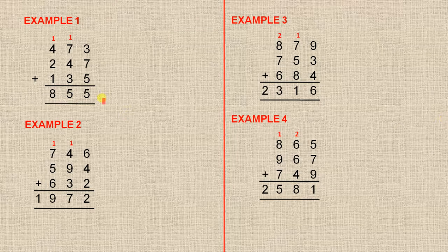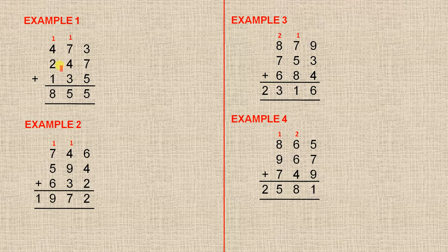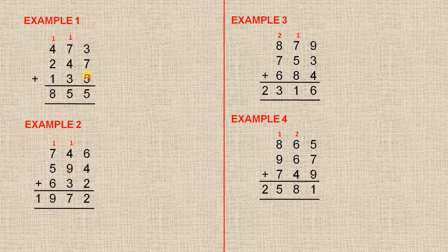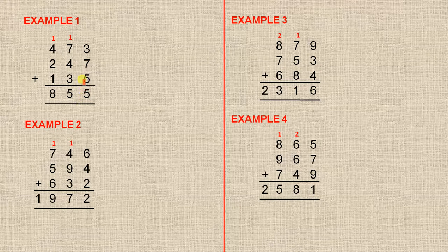Example one. We're adding four hundred and seventy-three, two hundred and forty-seven and a hundred and thirty-five. Starting with the units column, seven and five is twelve, plus three is fifteen. Put down the five, which is five units, and there's one ten.